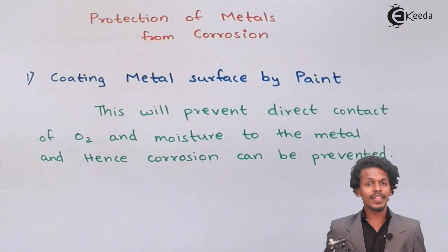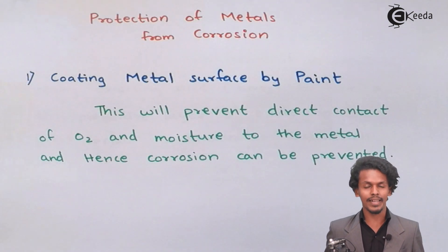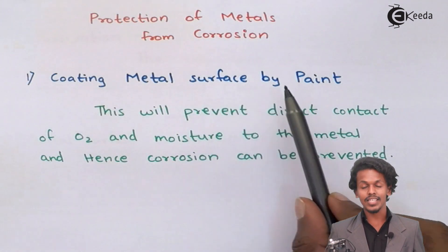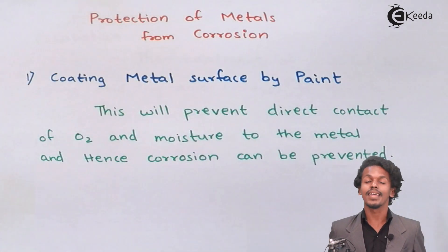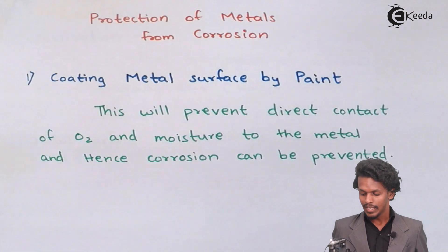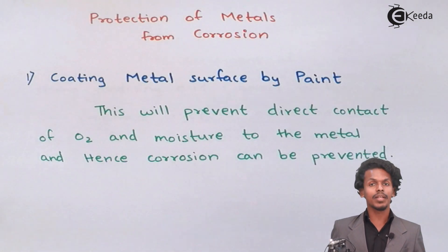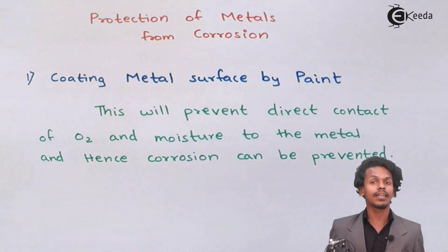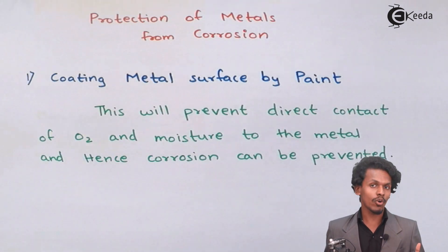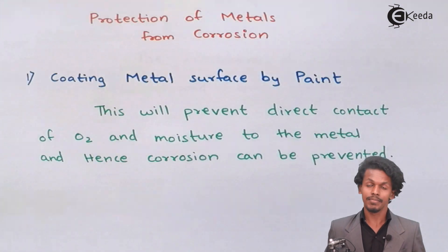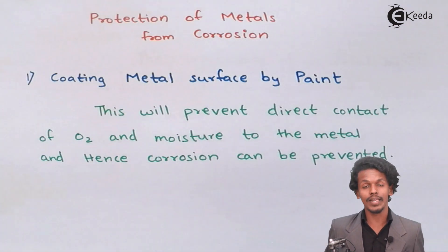So let us now study how we can protect a particular metal from corrosion. One of the methods to protect the corrosion of a metal is the common method of coating a metal surface with paint. If we paint a particular metal, what we are doing is preventing direct contact of oxygen or moisture with that metal.